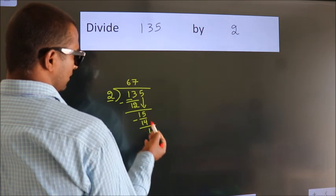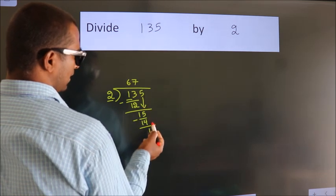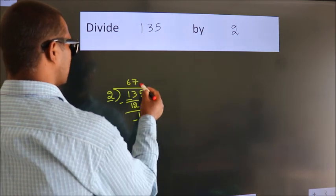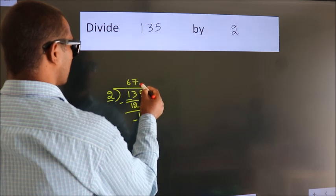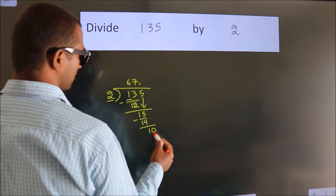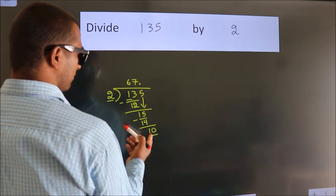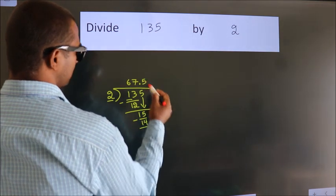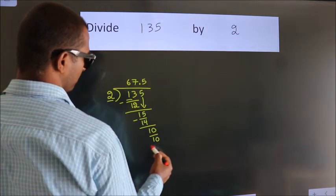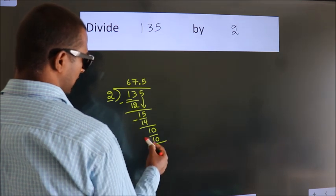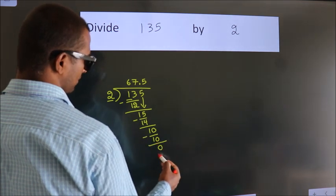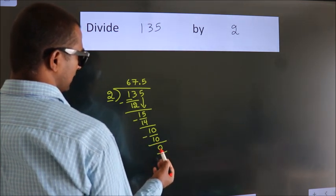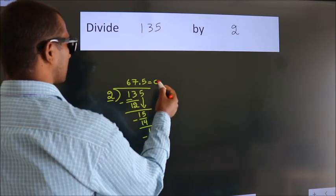After this, no more numbers to bring down. So we put a dot and take 0, making 10. When do we get 10 in the 2 times table? 2 times 5 equals 10. Now we subtract and get 0. We got remainder 0, so this is our quotient.